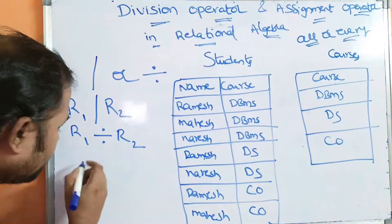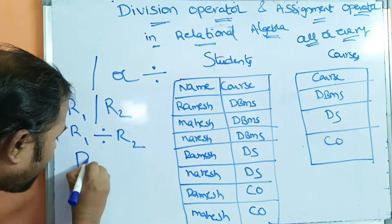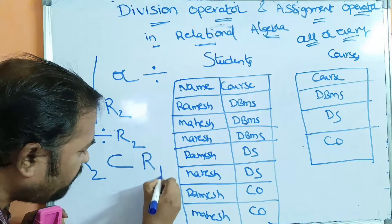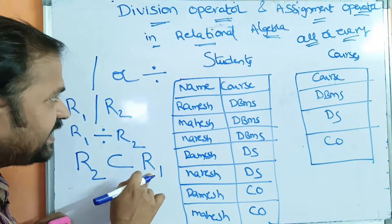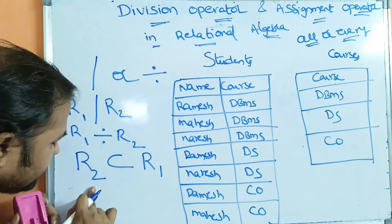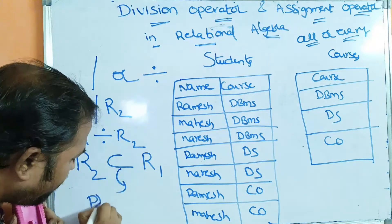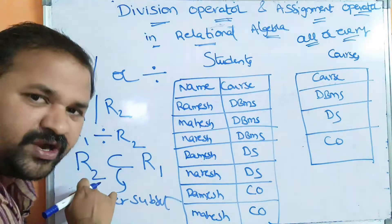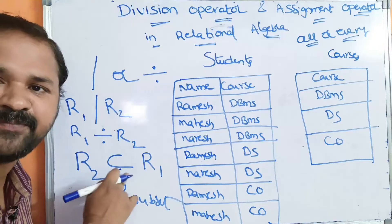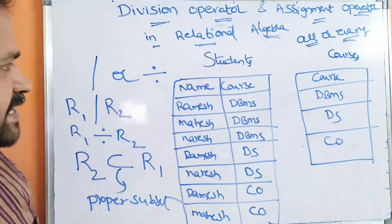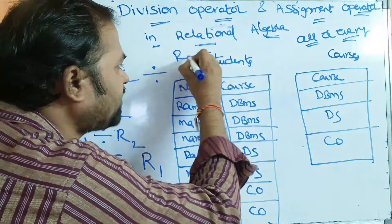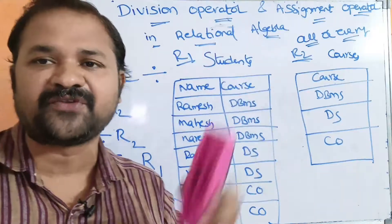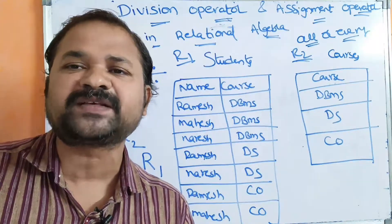One more important point: we can perform the division operator only if R2 is a proper subset of R1. Here R1 is the first relation and R2 is the second relation. This condition is called a proper subset. So we can perform division operation only when R2 is a proper subset of R1.